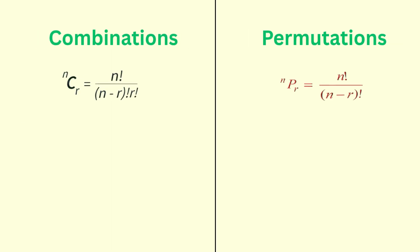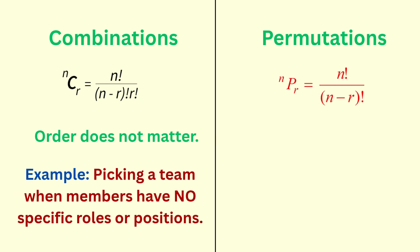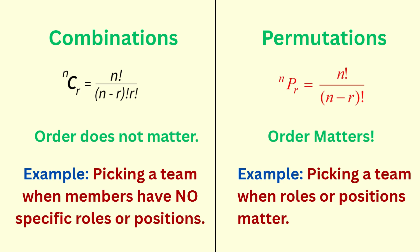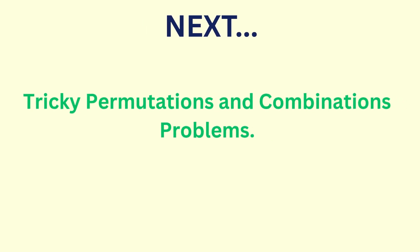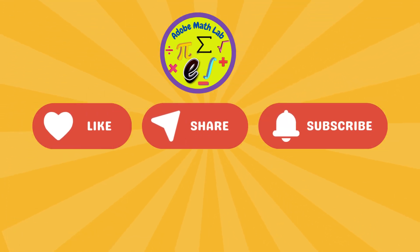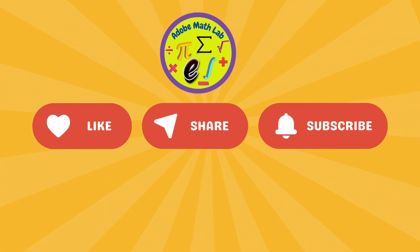Let's recap. Use combinations when the order doesn't matter, like choosing fruits to go to school or picking a team where specific positions or roles don't matter. Use permutations when positions or roles matter, like selecting officers for specific posts. Now that you have a foundation in the concept, we'll look at a few tricky problems in the next video. If this video helped you understand permutations versus combinations, hit that like button, subscribe, and share with a friend. See you soon.